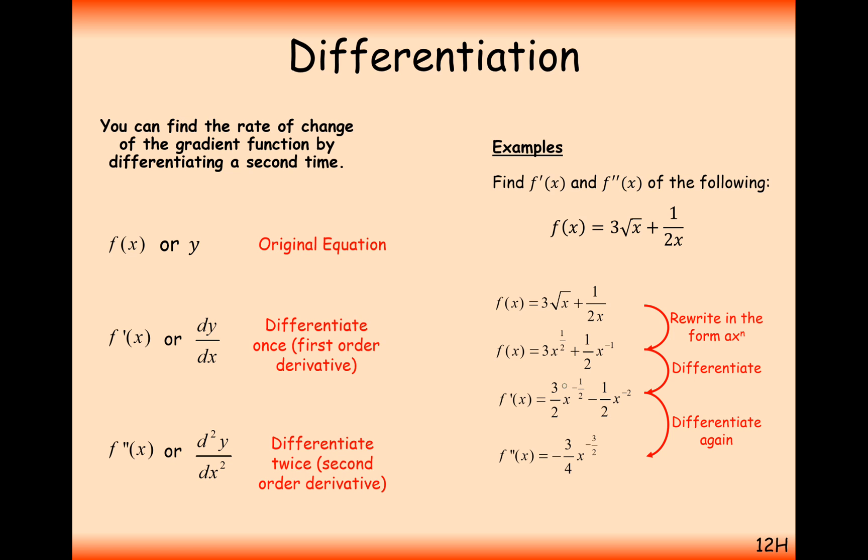Differentiating again: it's minus one half times 3 over 2, and then minus 2 times minus one half which gives 1 again. So we get minus 3 quarters x to the power of minus 3 over 2, plus x to the power of minus 3.